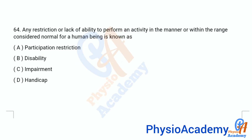Question number 64: Any restriction or lack of ability to perform an activity in the manner or within the range considered normal for a human being is known as — option A participation restriction, option B disability, option C impairment, option D handicap. The correct answer is option B: disability.